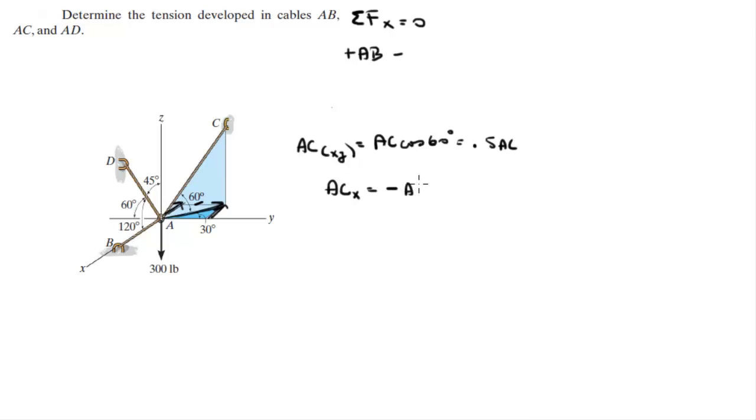Therefore, the X component of AC is equal to negative, because it's going in the negative X direction, the projection XY times the sine of 30. The projection is 0.5 AC, negative 0.5 AC times the sine of 30, and that comes out to be 0.25 AC. So back to the sum of the forces in the X, minus 0.25 AC.